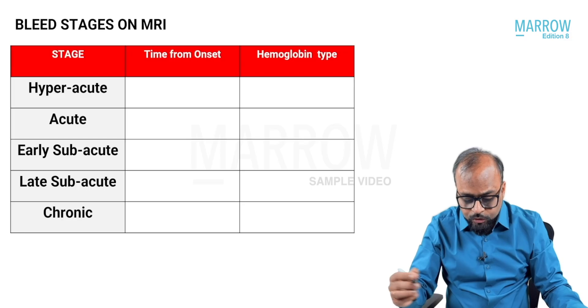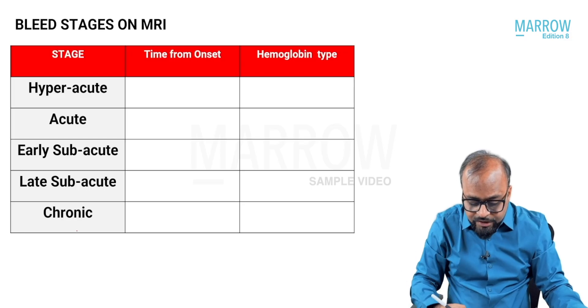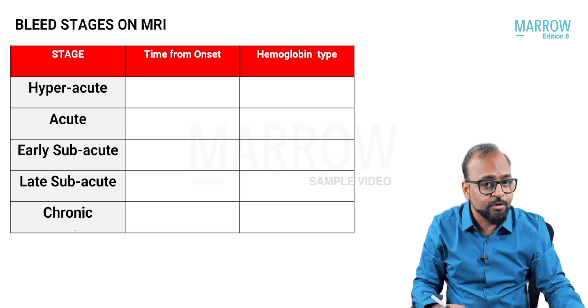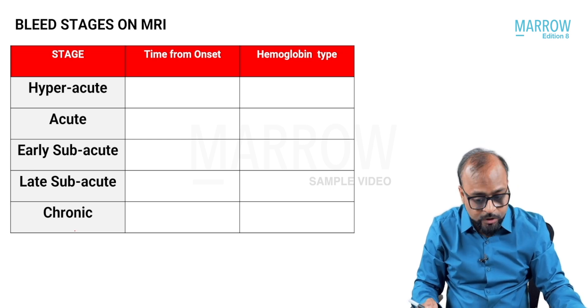We have focused on the appearance of hemorrhage on CT scan, but now there's an important way in which MRI reveals the various stages of bleed or hemorrhage within the brain parenchyma. There are five stages in which any bleed or hemorrhage within the brain parenchyma can be classified.